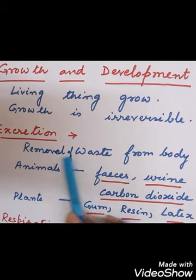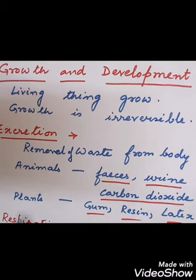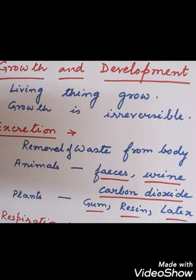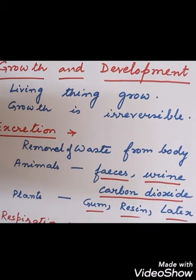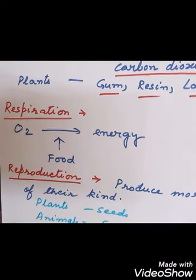The next important feature of living things is excretion. In this process, living things remove waste from the body. The solid waste is feces, the liquid waste is urine, and the gaseous waste is carbon dioxide in animals. In plants, the waste products are gums, resins, and latex. These excretory products are harmful and must be removed from the body. The removal of waste from the body is called excretion, and these products are not stored inside the body.